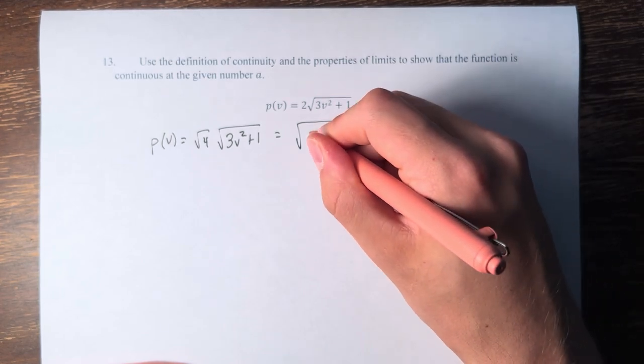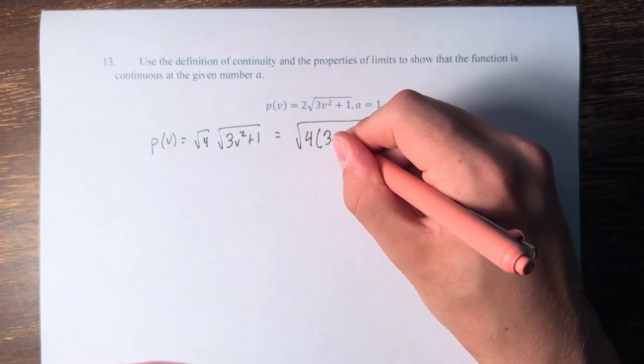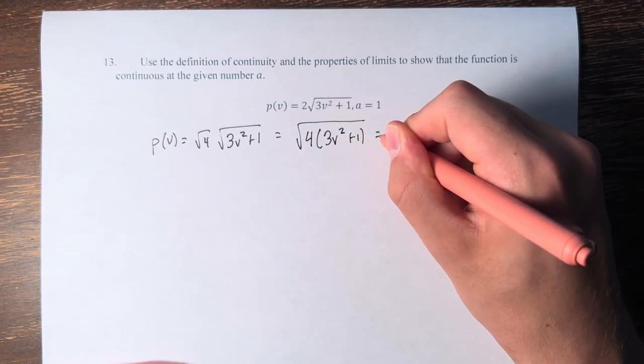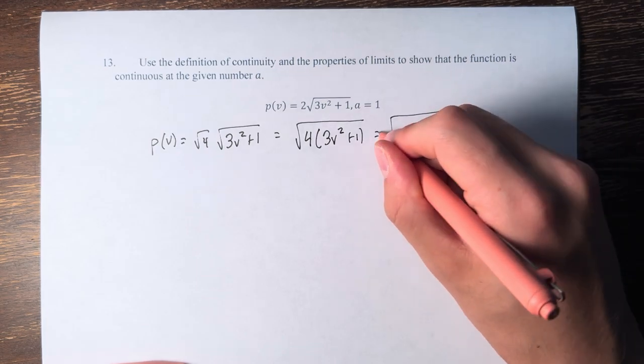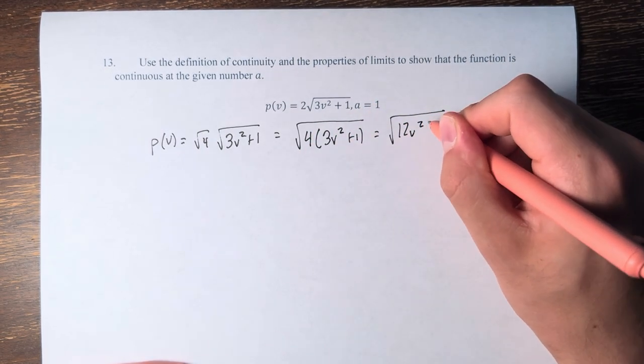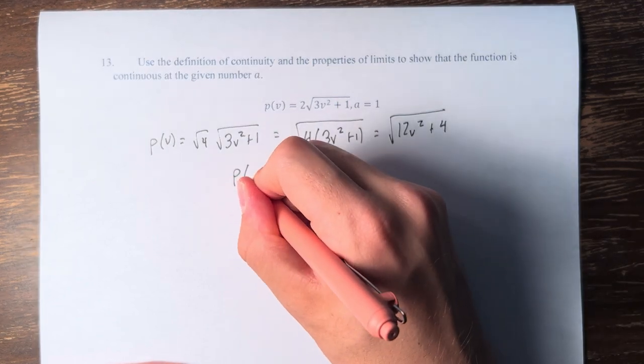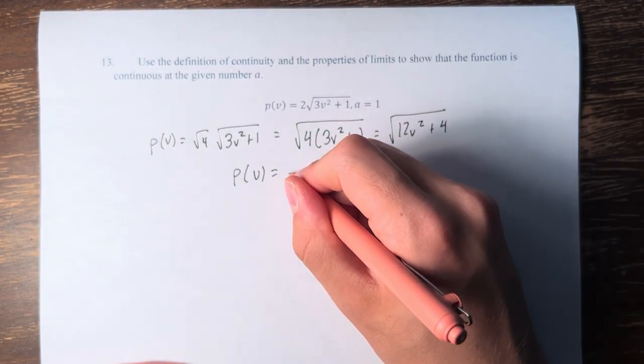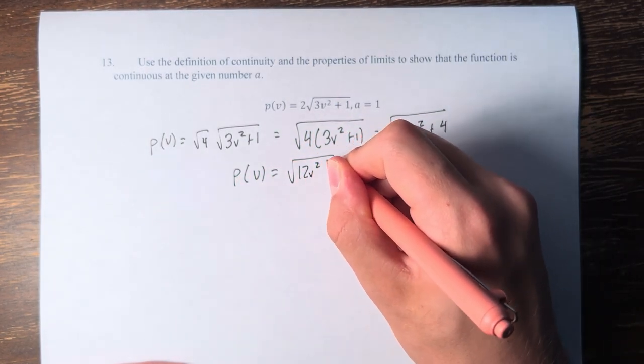Therefore, this is equal to the square root of 4 times 3v squared plus 1. Therefore, this is equal to 4 times 3 is 12v squared plus 4 times 1 is 4. Therefore, p of v is equal to the square root of 12v squared plus 4.